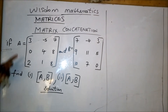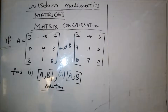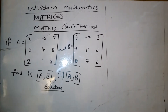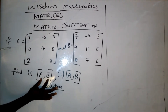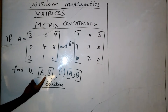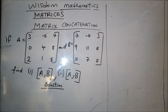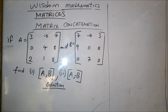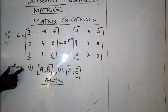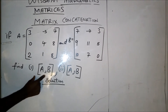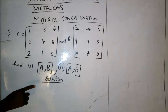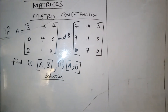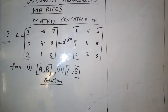In matrix concatenation, there are two types. We have the horizontal concatenation and vertical concatenation. Whenever you see a comma in the question on matrices, it stands for horizontal concatenation. When we have a semicolon, it stands for vertical concatenation. So the first question is asking us to get the horizontal concatenation matrix, while the second question is asking us to get the vertical concatenation of the two matrices.